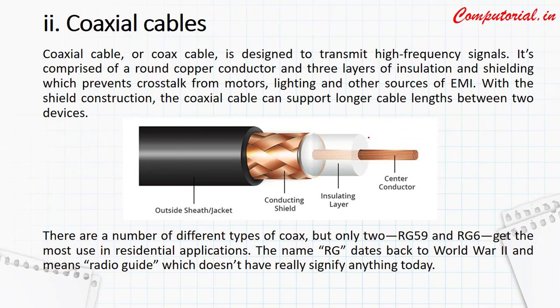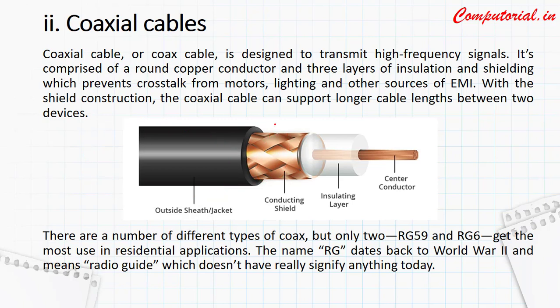The top layer is the jacket, which generally prevents the cable from breaking. Along with that, radiation from light is also prevented. Next, we have the conducting shield, which is used to reduce electromagnetic induction. Then we have the insulating material, which protects the cable. And in the last, we have the main cable, which is used to transmit the data.